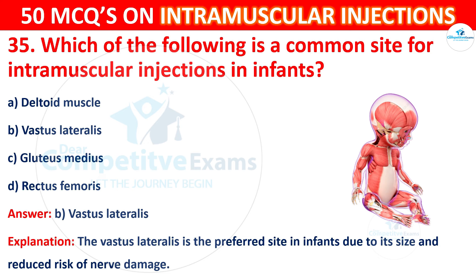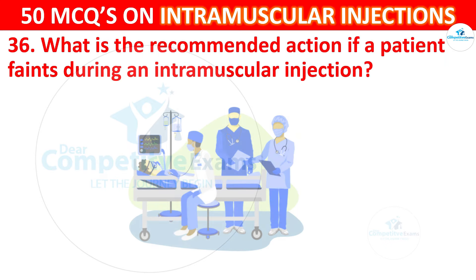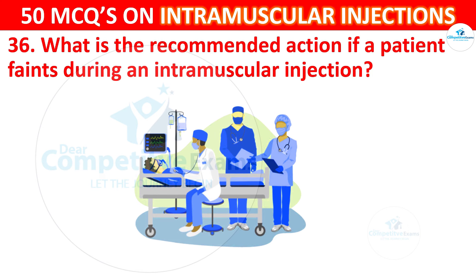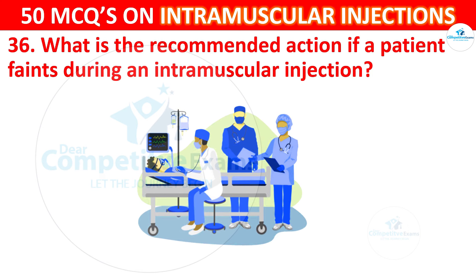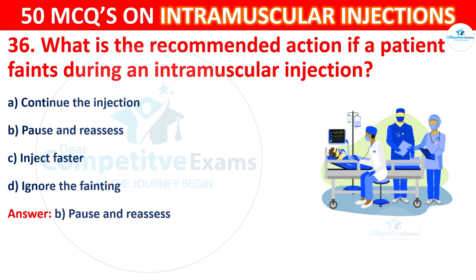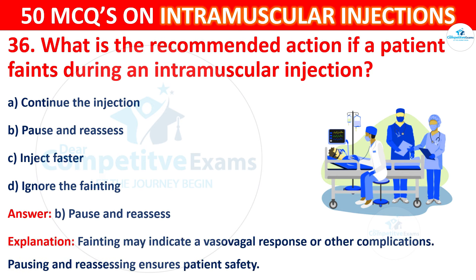Question 36: What is the recommended action if a patient faints during an intramuscular injection? Options are: continue the injection, pause and reassess, inject faster, or ignore the fainting. The correct answer is B, pause and reassess. Fainting may indicate a vasovagal response or other complications. Pausing and reassessing ensures patient safety.